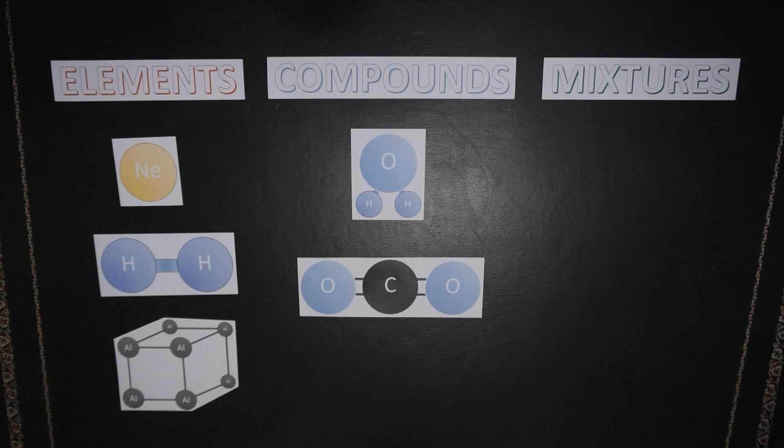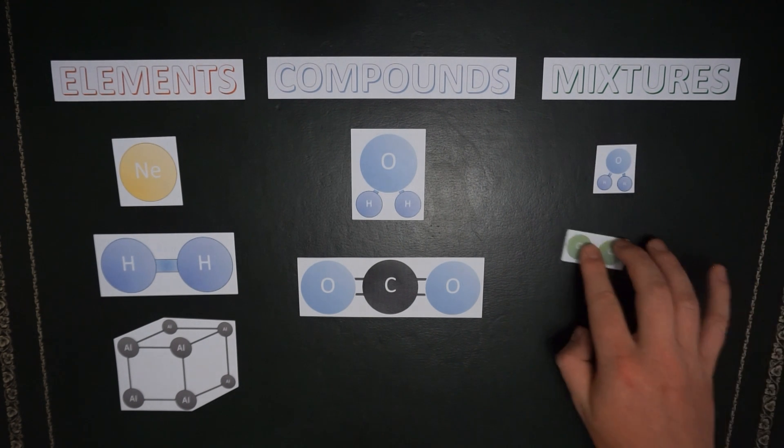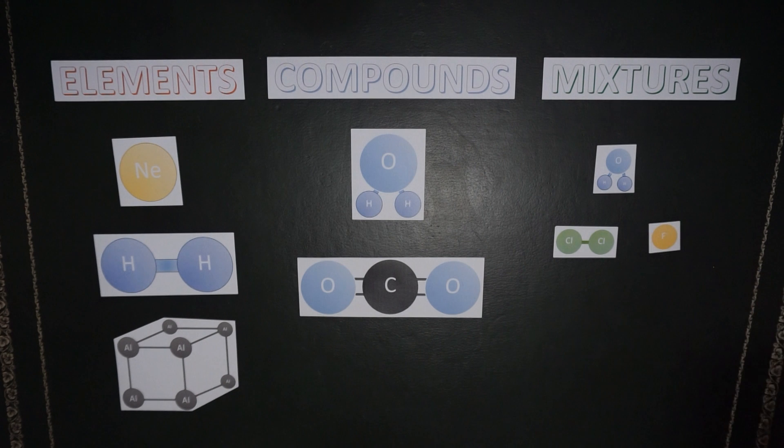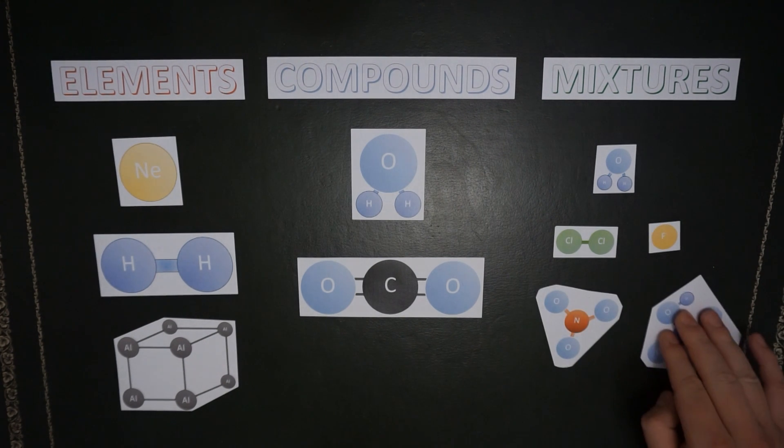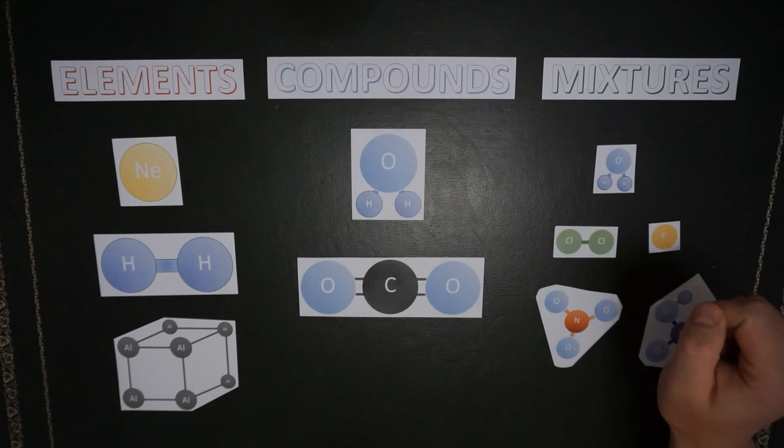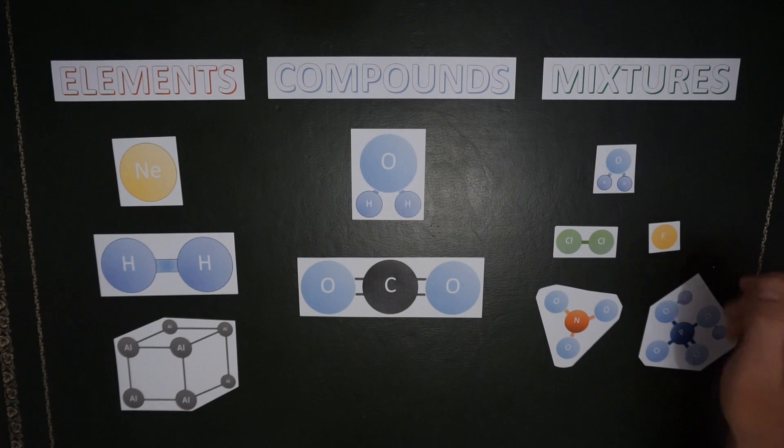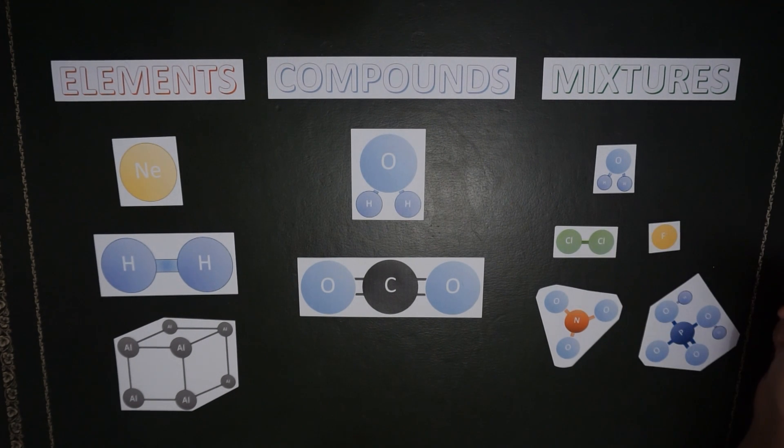Lastly, we have mixtures. Mixtures contain a whole bunch of different elements and compounds. We don't necessarily know the proportions of the elements within a mixture, unlike in a compound where we know exactly what the proportions of the elements are. For this reason, we can't give a chemical formula for a mixture because we don't actually know the proportions of the elements.